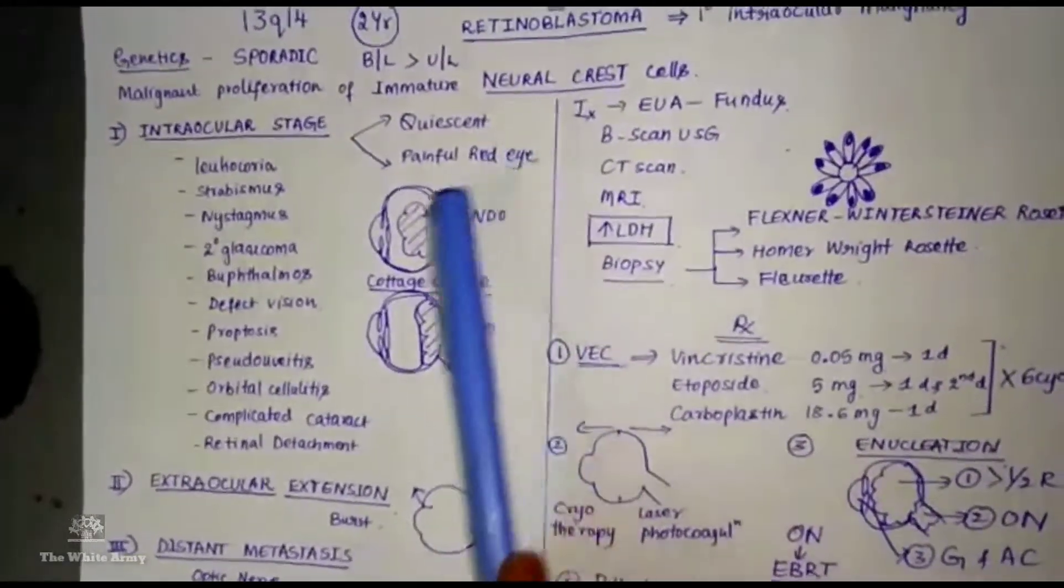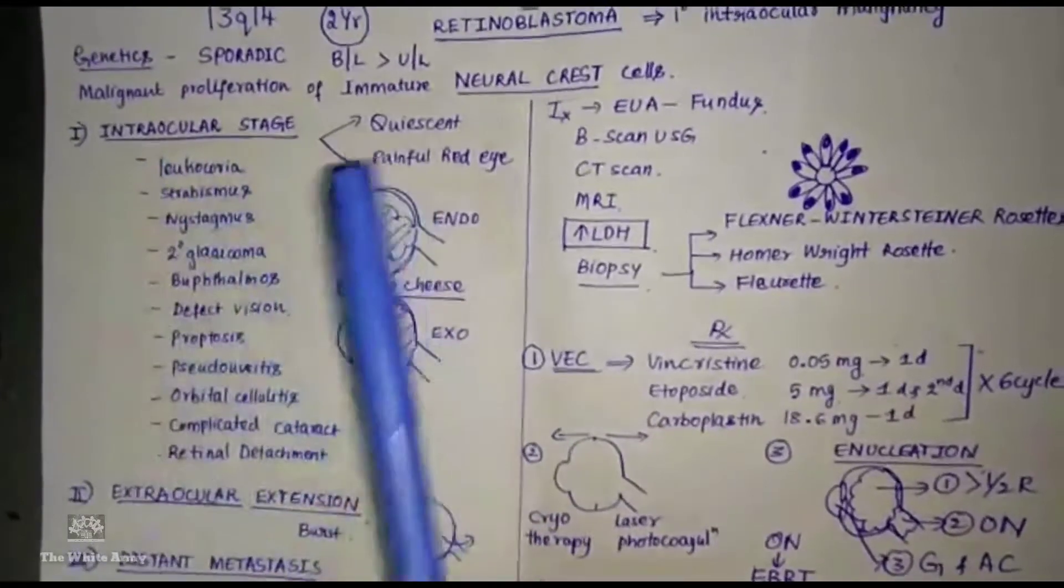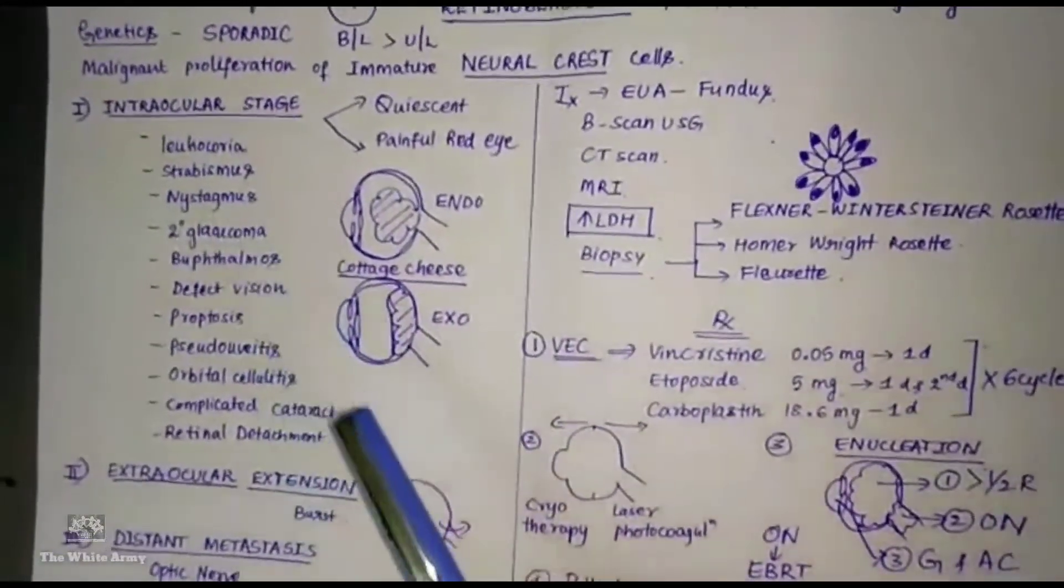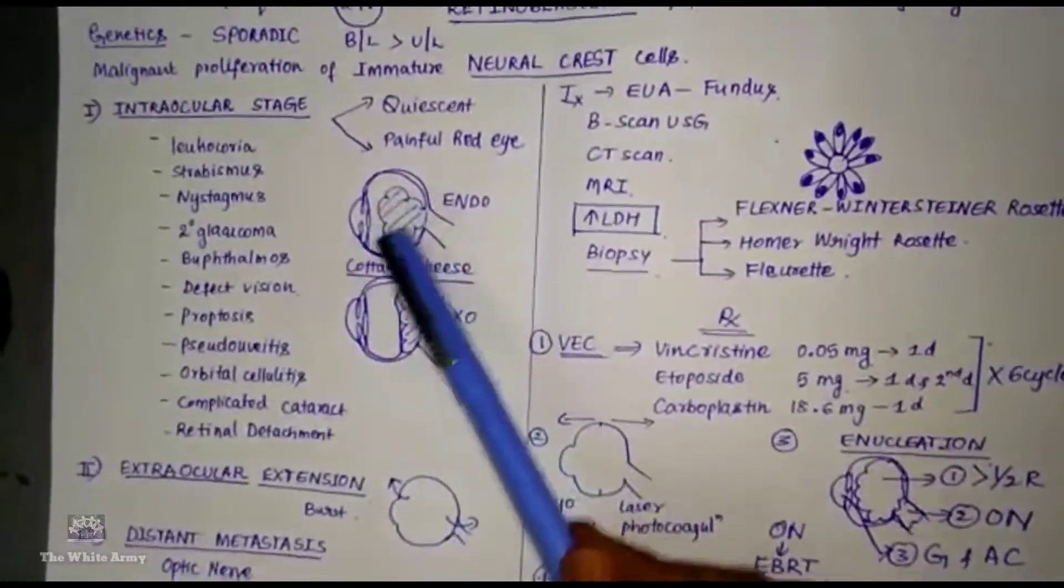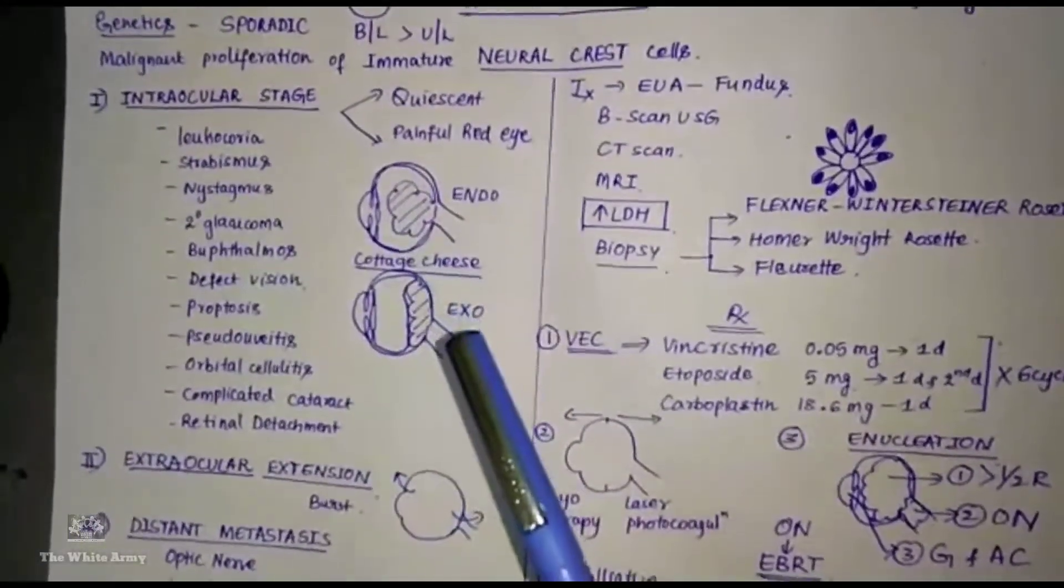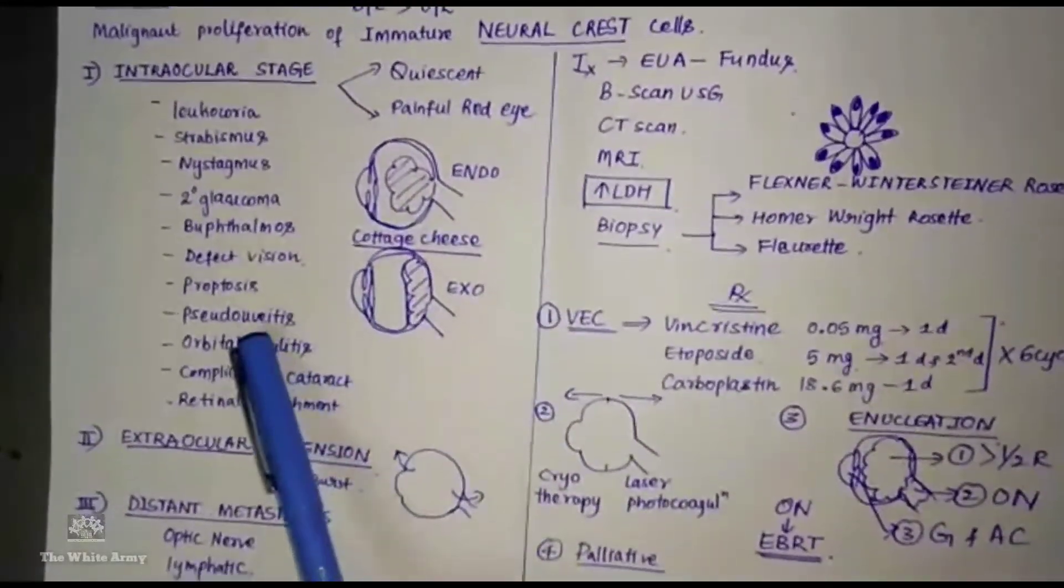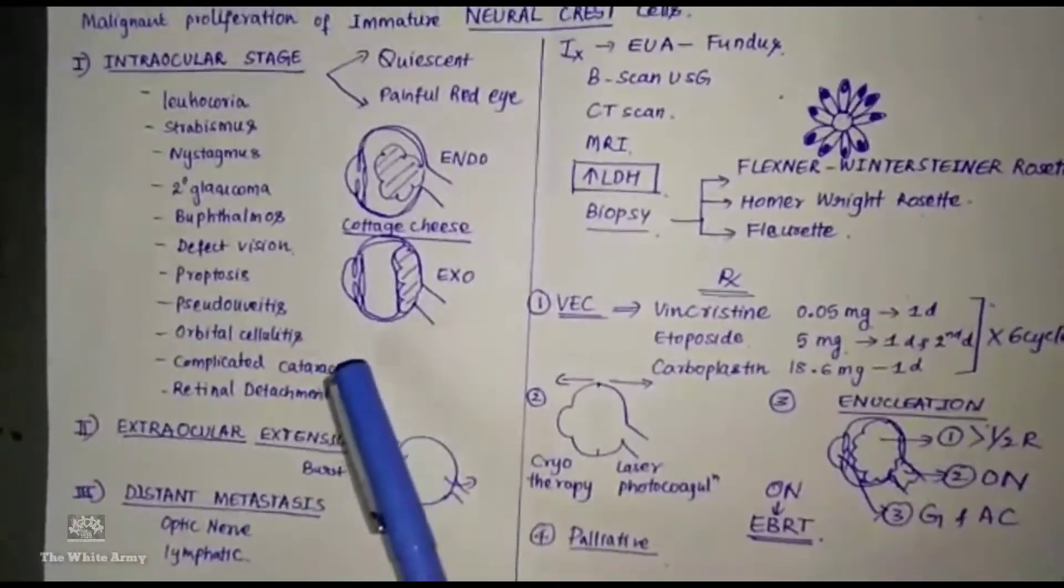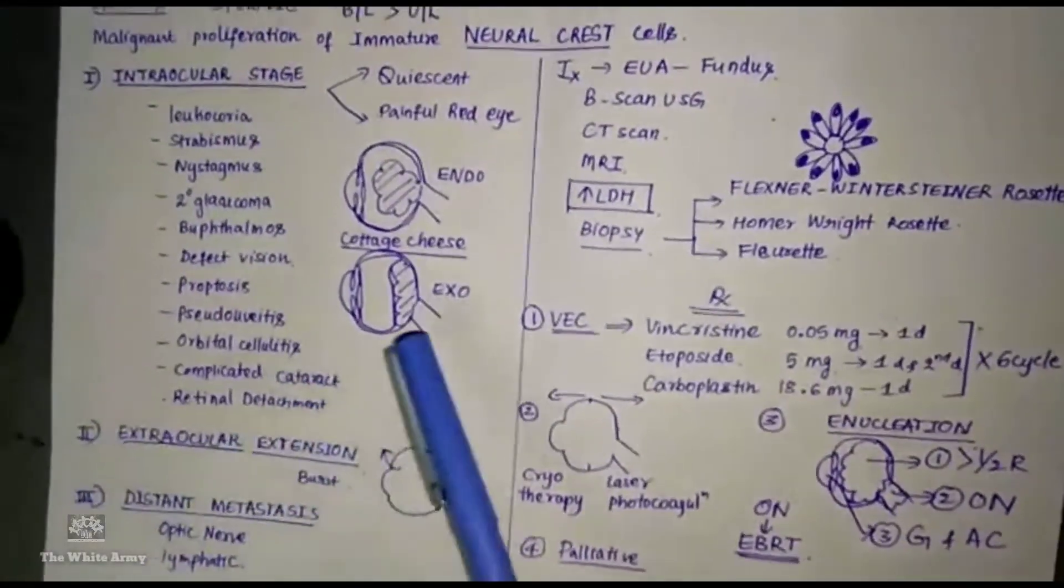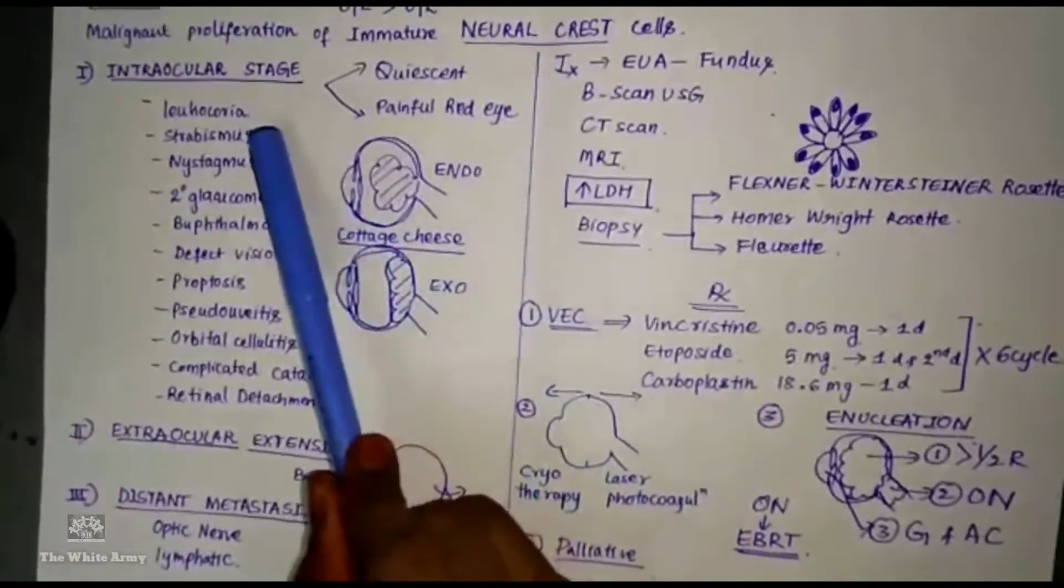In the crescent stage, the patient presents with leukochoria, which is whitish pupillary reflex. Because of defective vision, the patient presents with strabismus and nystagmus. The tumor increases pressure inside the eye, causing secondary glaucoma, proptosis, and buphthalmos. The tumor is associated with inflammation of the uveal tissue causing pseudo-uveitis, orbital cellulitis, and complicated cataract. Finally, when the tumor is progressive it causes retinal detachment. The most common presentation is leukochoria.